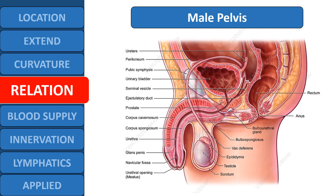In the male pelvis, the upper half is similar, with a peritoneal reflection forming the rectovesical pouch, which lies between the urinary bladder and the rectum. In the lower half, it is related to multiple structures including the lower part of the ureter, the distal part of the vas deferens, the seminal vesicle, and the prostate. The Denonvilliers fascia is also present here, with the perineal body located below.